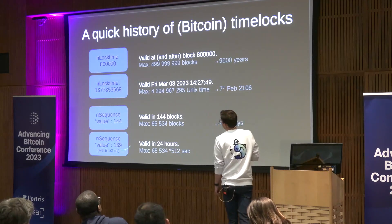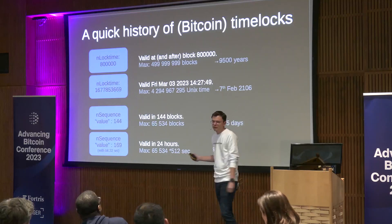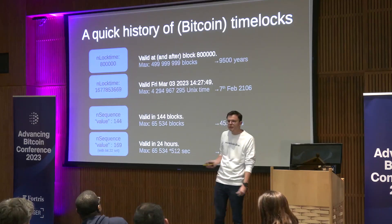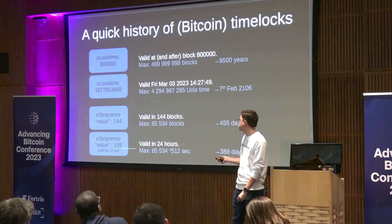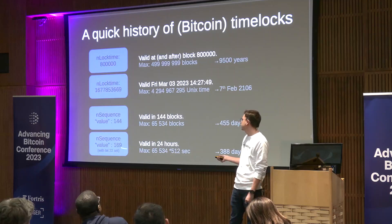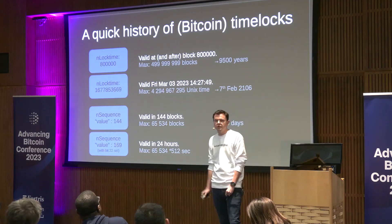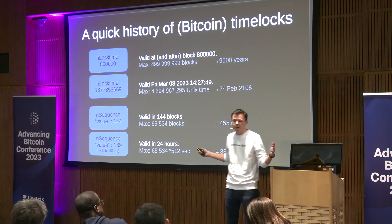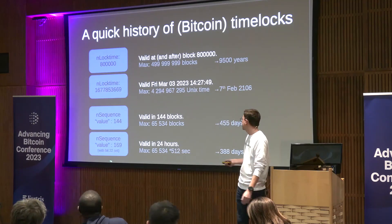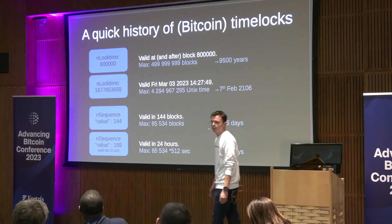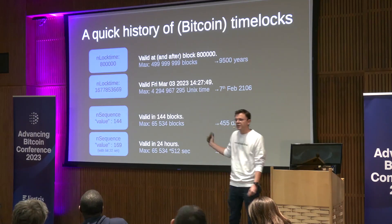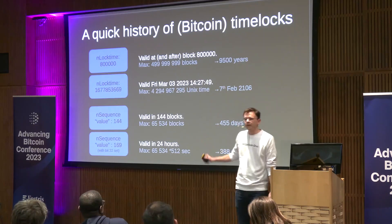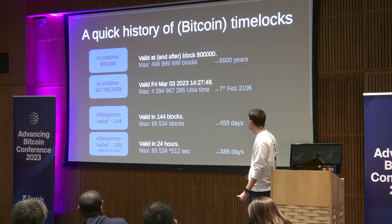In the sequence field it's a bit more complicated — there are different bits with different meanings. If bit 22 is set, the value is interpreted as the value times 512 seconds — that's the time in seconds. If the bit is not set, it's just a number of blocks. 512 seconds is not exactly 10 minutes, but it's close enough.